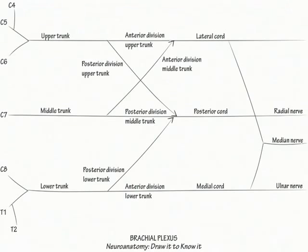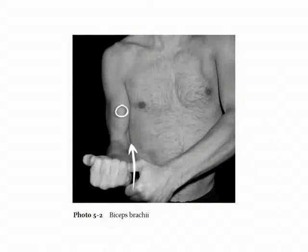Next, just distal to the lateral cord, label the musculocutaneous nerve, which innervates the biceps brachii muscle. Flex your arm at the elbow to demonstrate its action.